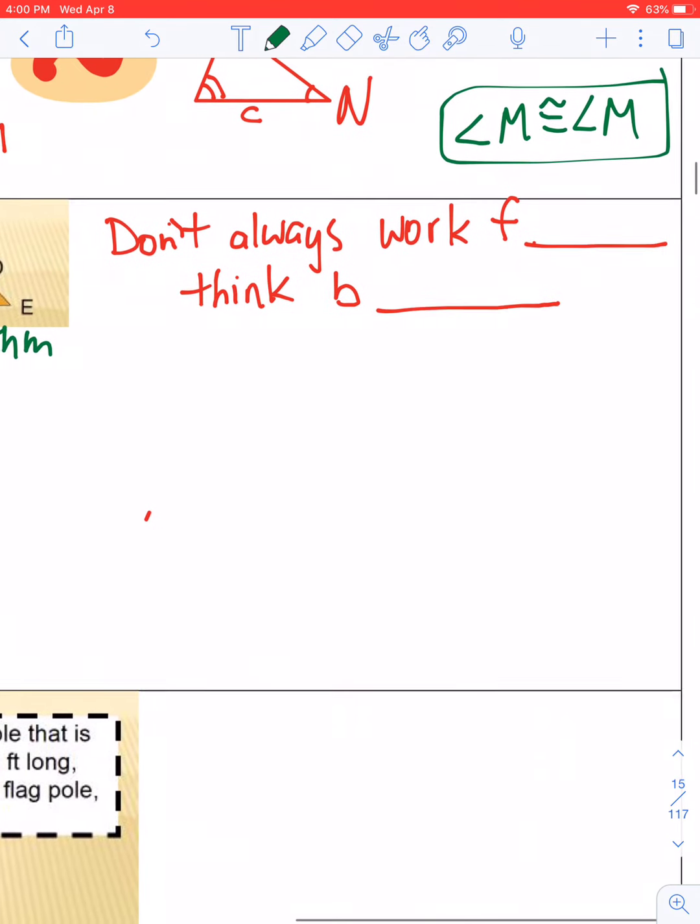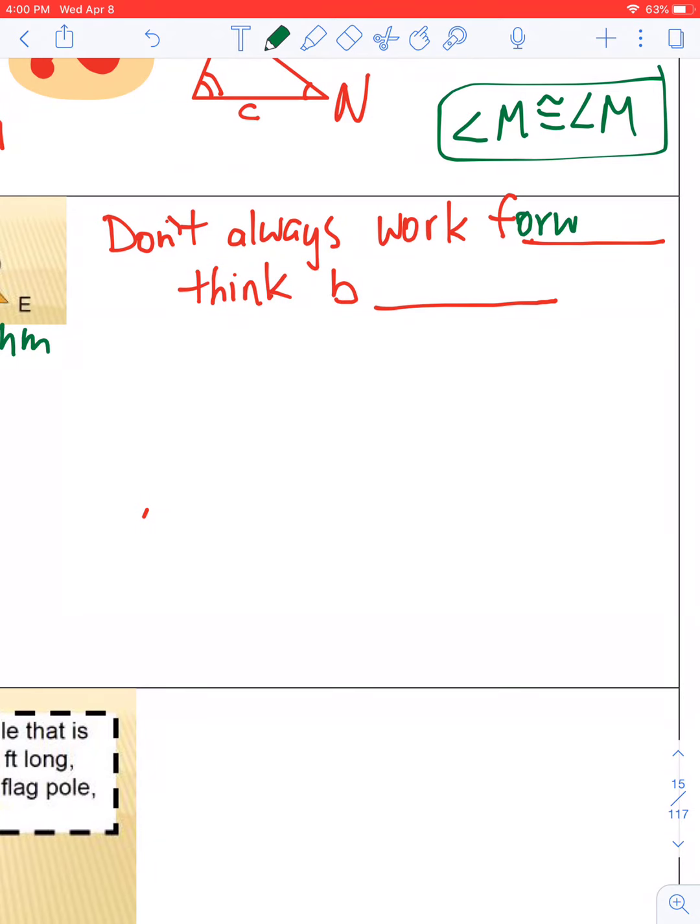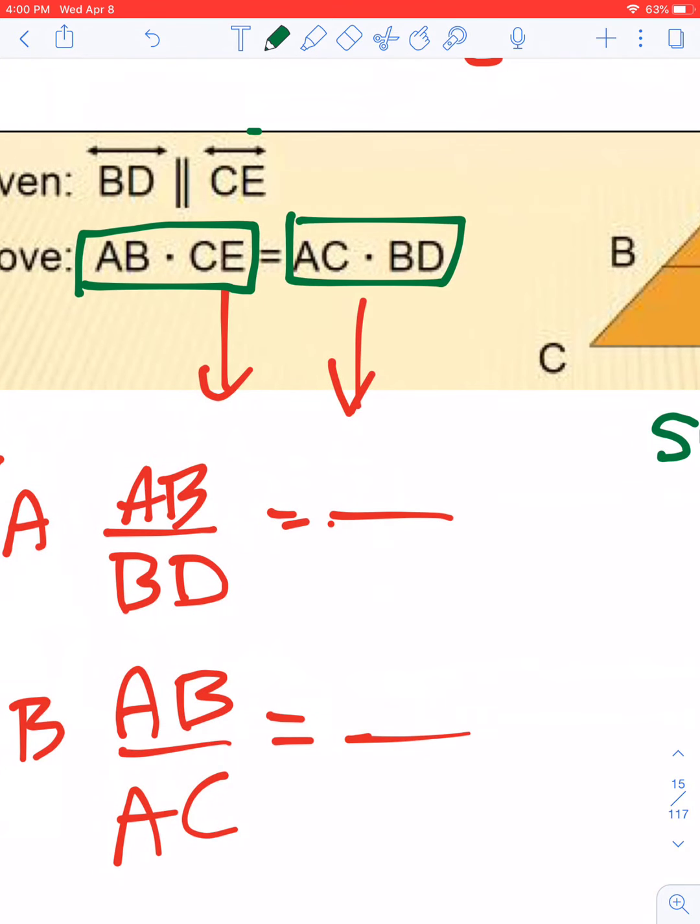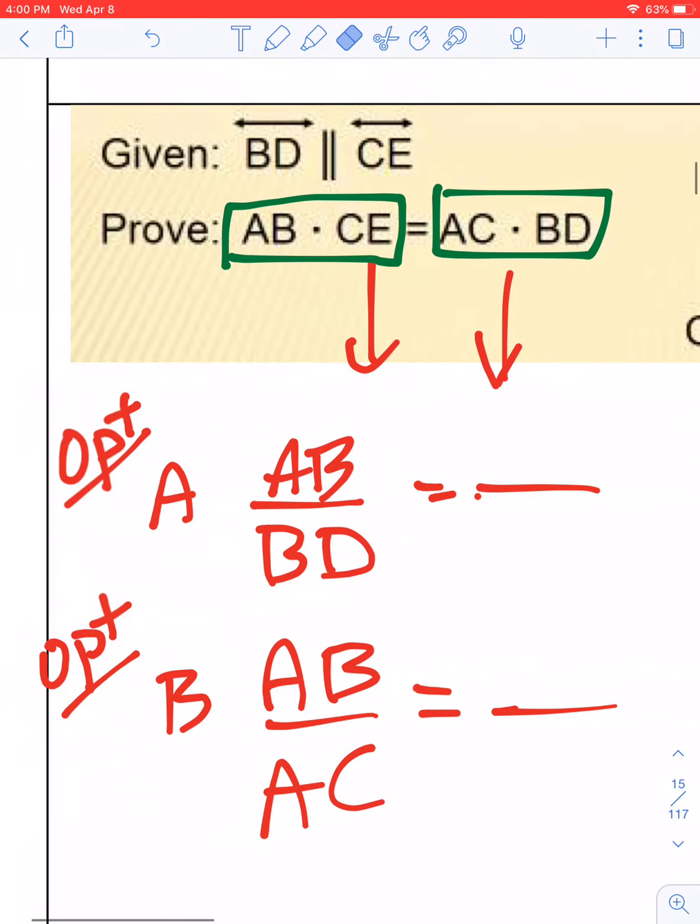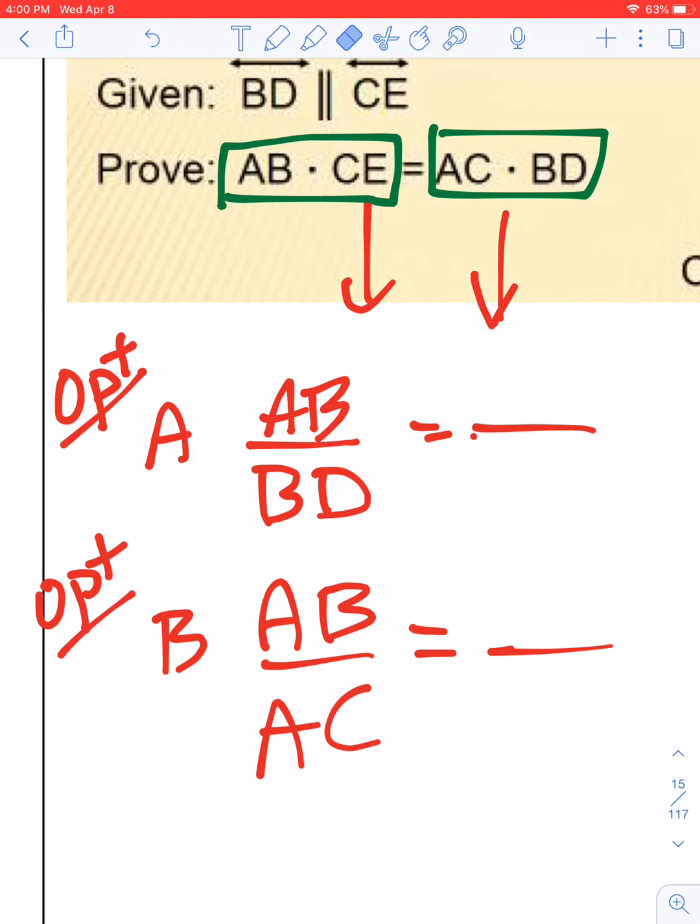And I would also take note that it helps sometimes to not always think forward, but to think backwards. Meaning, don't start with the given, start with the proof. So in light of that, there's two ways that you could go with this. Say we had AB over BD. Then what would be the proportion on the other side? Well, you can see the AC is upstairs, and the CE would come downstairs. So that's one way of setting up the proportion before that proof line.